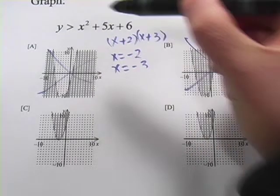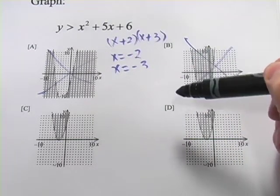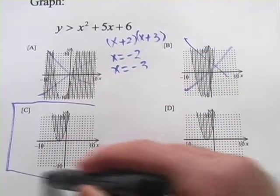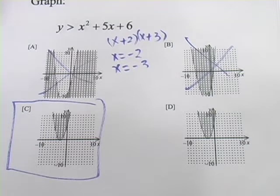If you had that equals there, greater than or equal to or less than or equal to, it would be a solid line. In this case, the correct answer is the dashed line c. Let's try one more.